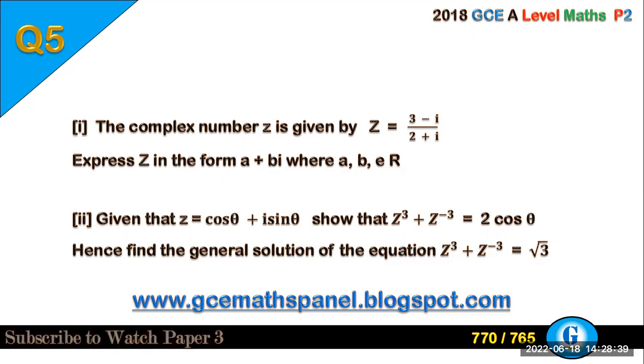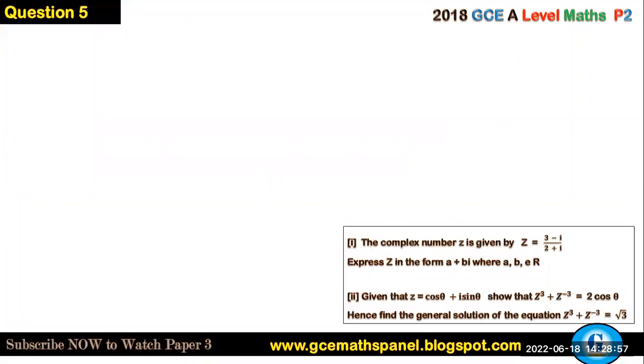Part two: Given that z = cos θ + i sin θ, show that z³ + z⁻³ = 2 cos θ. Hence find the general solution of the equation z³ + z⁻³ = √3. So let's circle this question.